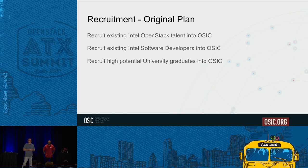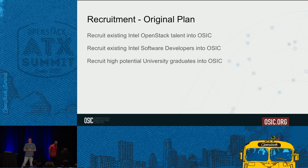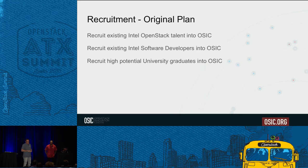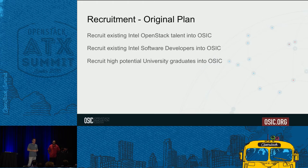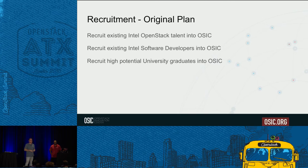In order to find the right people, we needed the right mix. We wanted to find existing Intel software engineers who want to be part of this and have the right skill set, plus existing OpenStack talent within Intel. The other side of the coin was recruiting high-potential university graduates. We have hired a lot of recent college graduates — many come in with master's degrees in computer science. They're very talented, have done internships, potentially worked at other places. They come in and we train them.